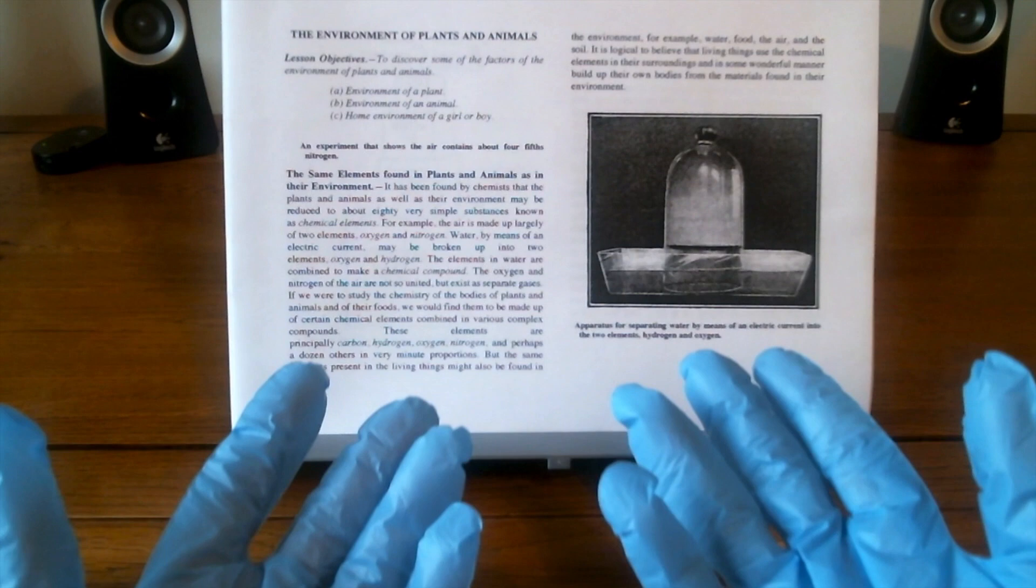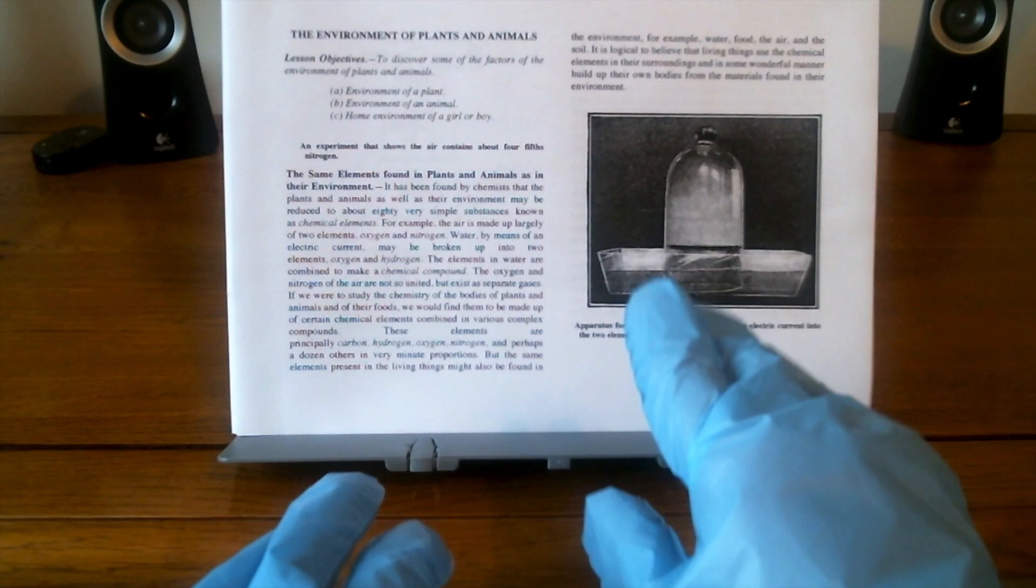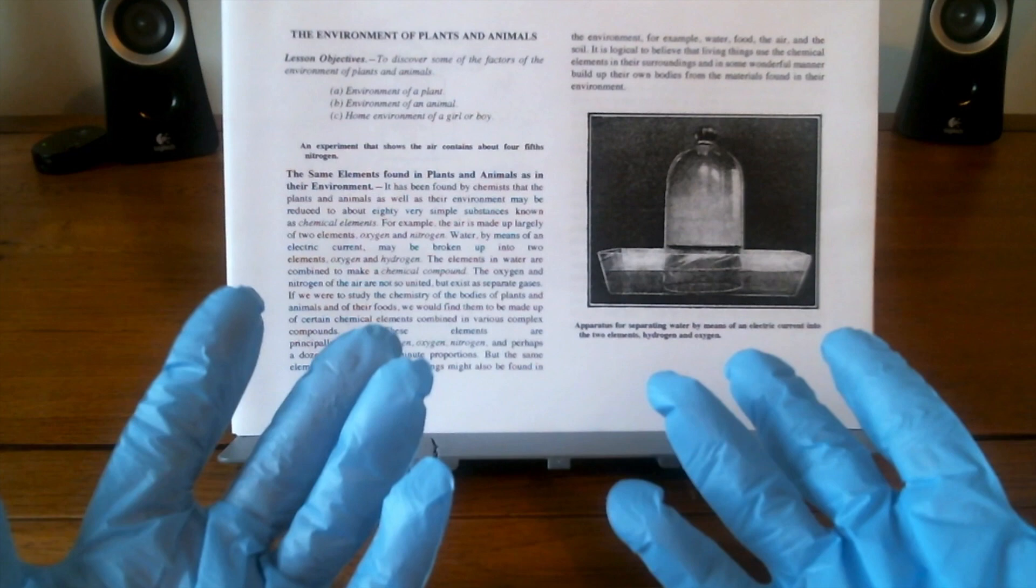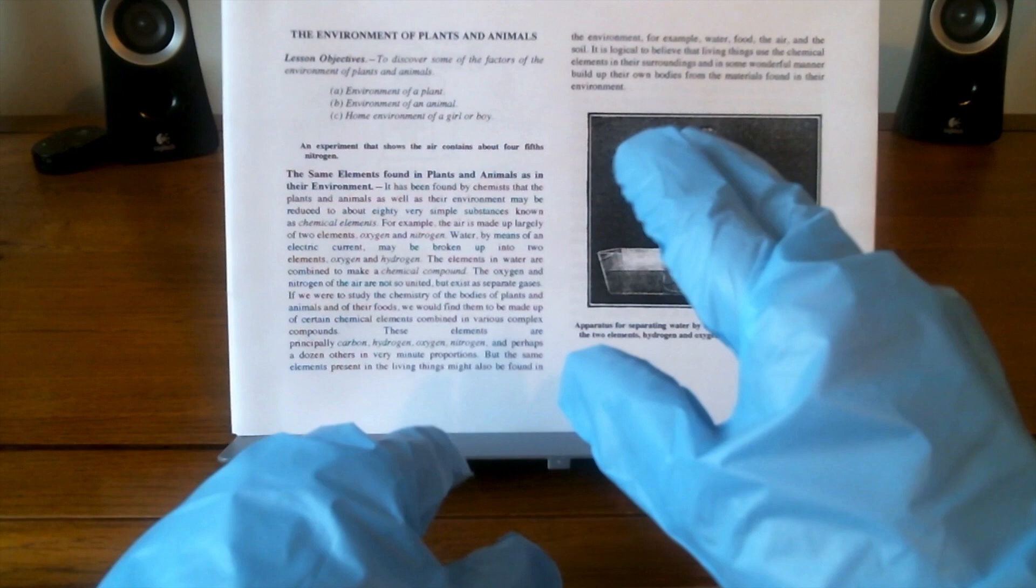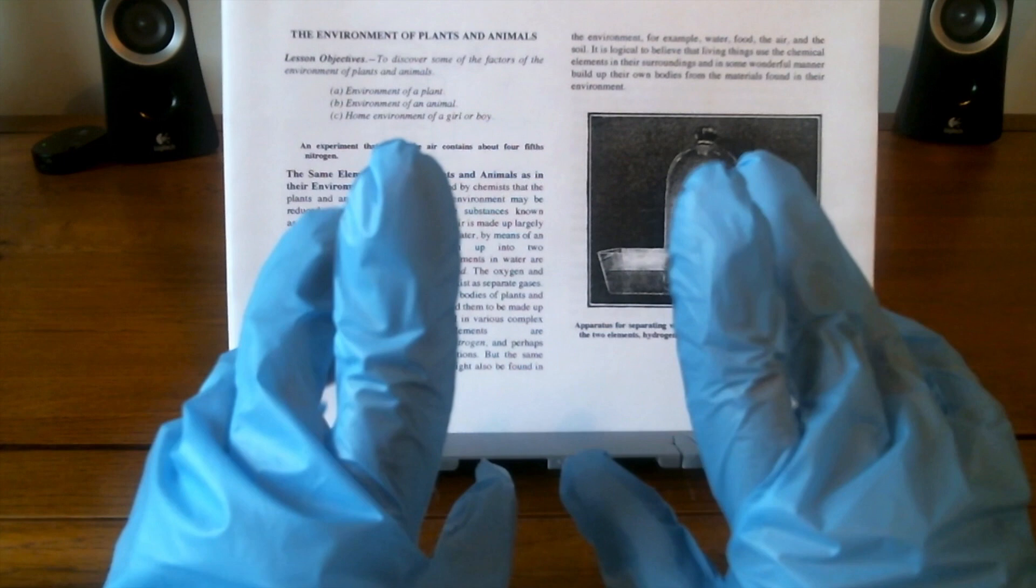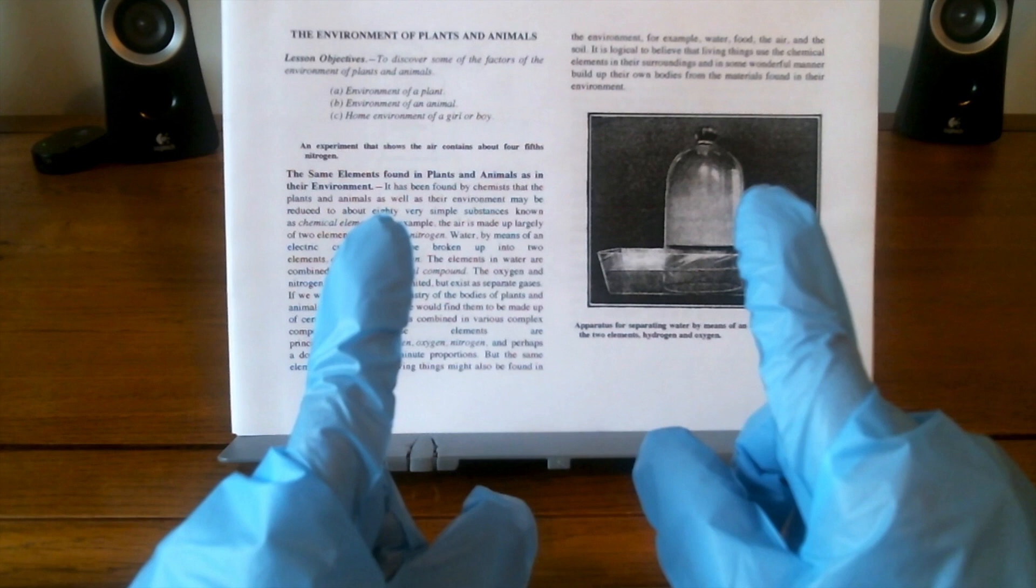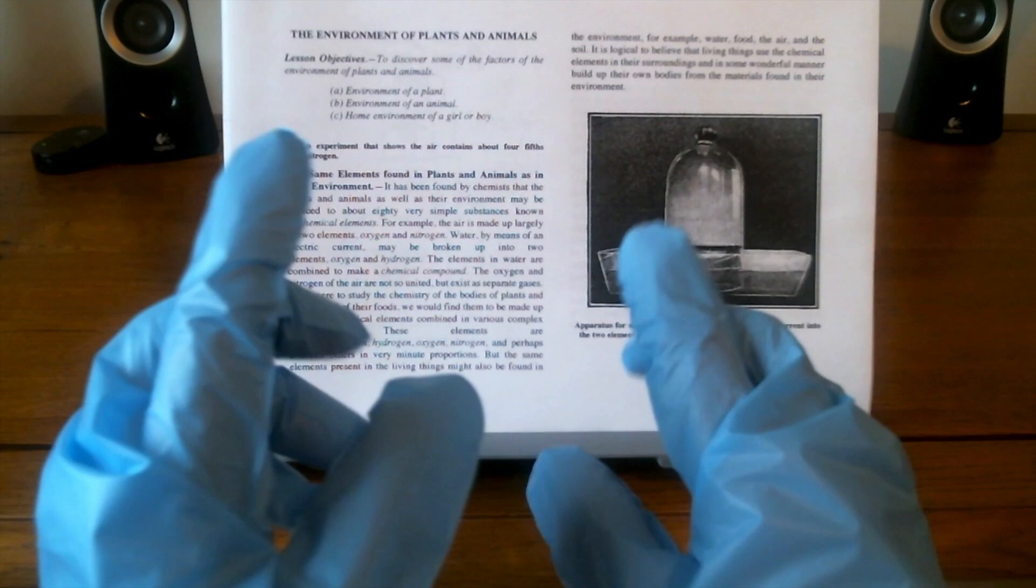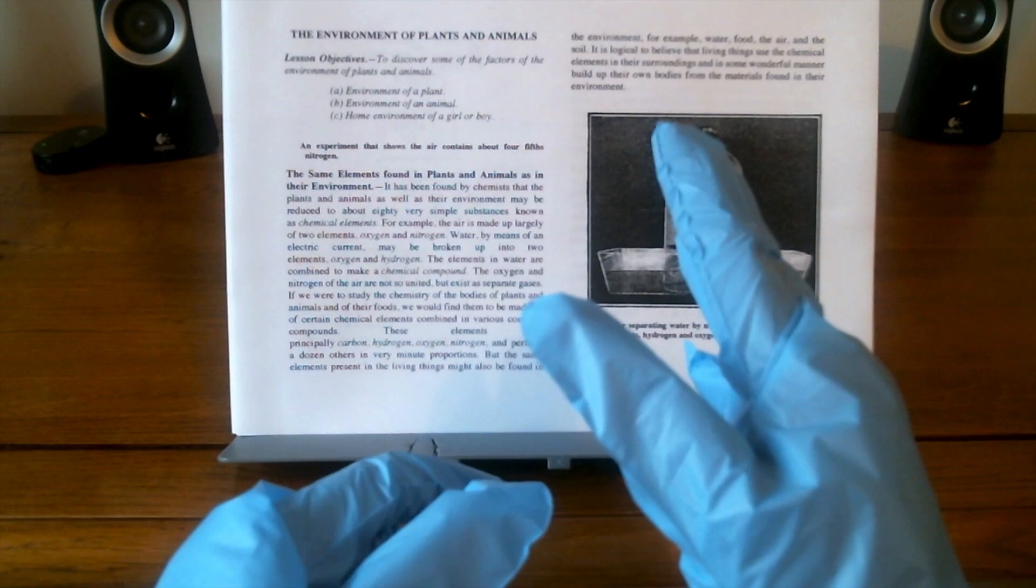So let's get into the lesson. The environment of plants and animals. Lesson objectives: to discover some of the factors of the environment of plants and animals. A, environment of a plant. B, environment of an animal. C, home environment of boys or girls.